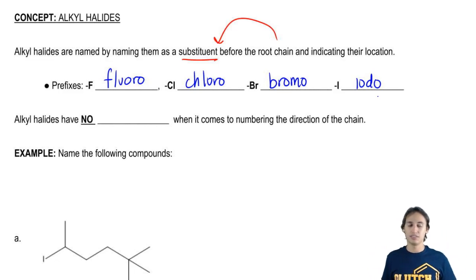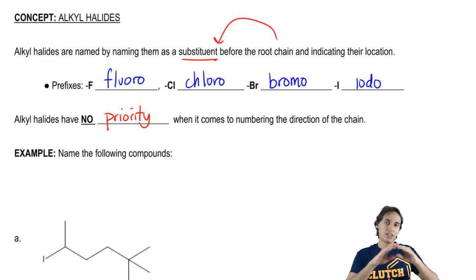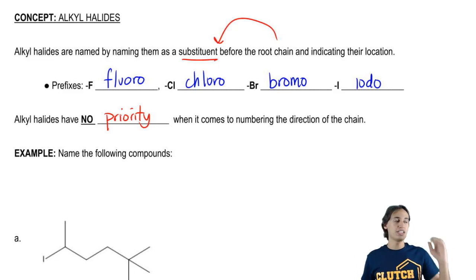The next thing that you should know is that alkyl halides have no priority, zero priority, when it comes to numbering the direction of the chain. So what that means is a lot of people think, oh, I've got this long chain and this side has a chlorine on it, so that must be the side that has the one that I start from. No, not at all.